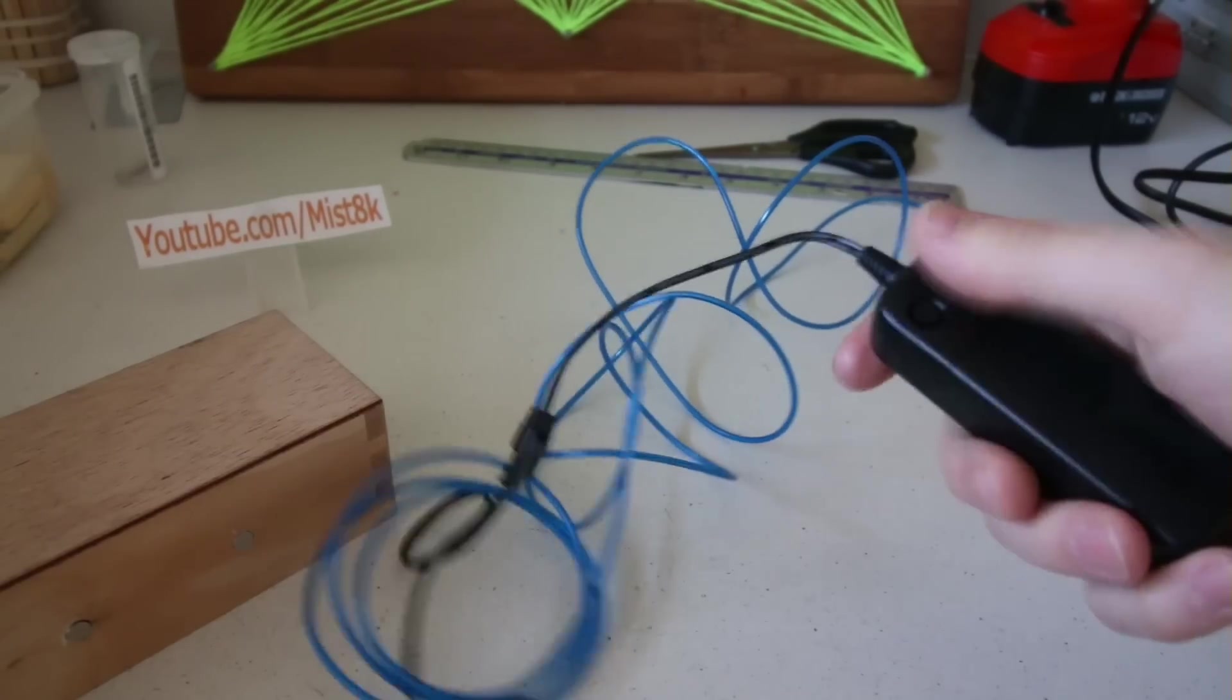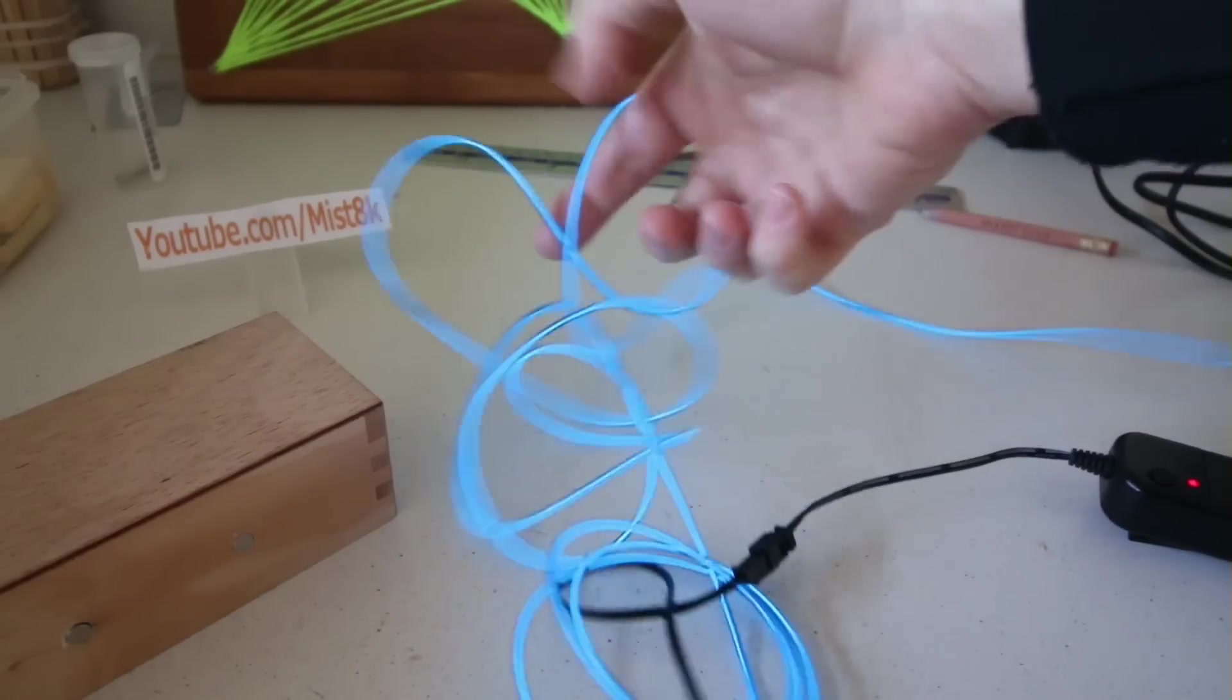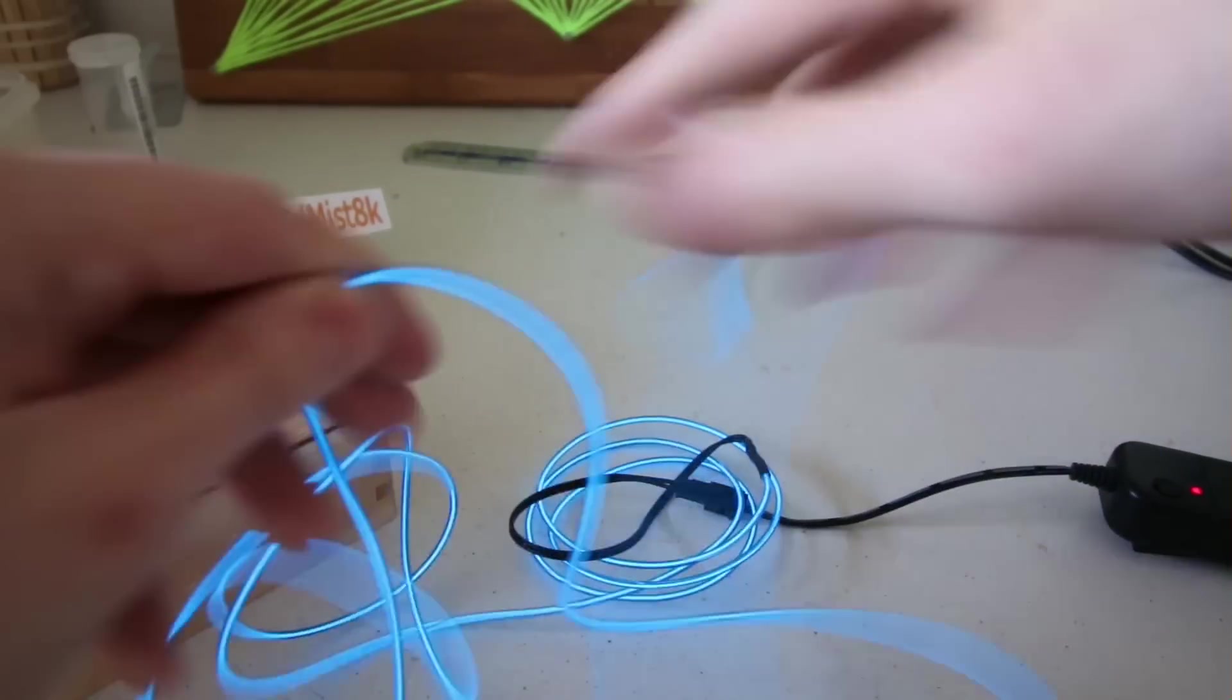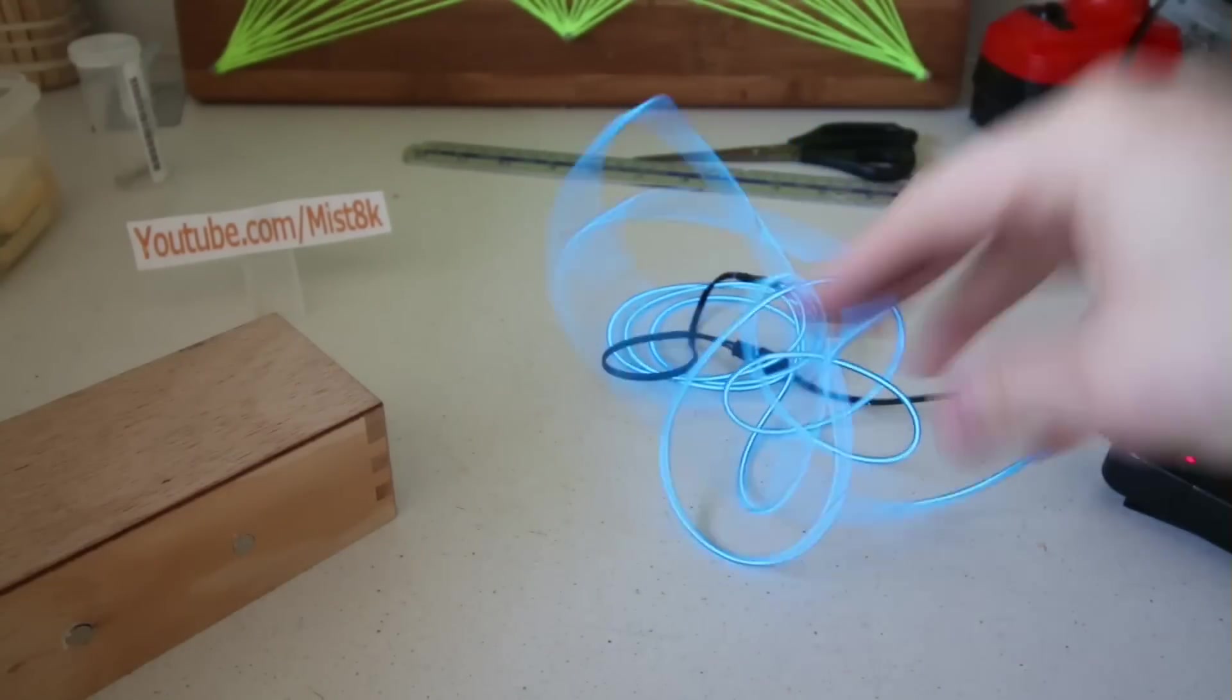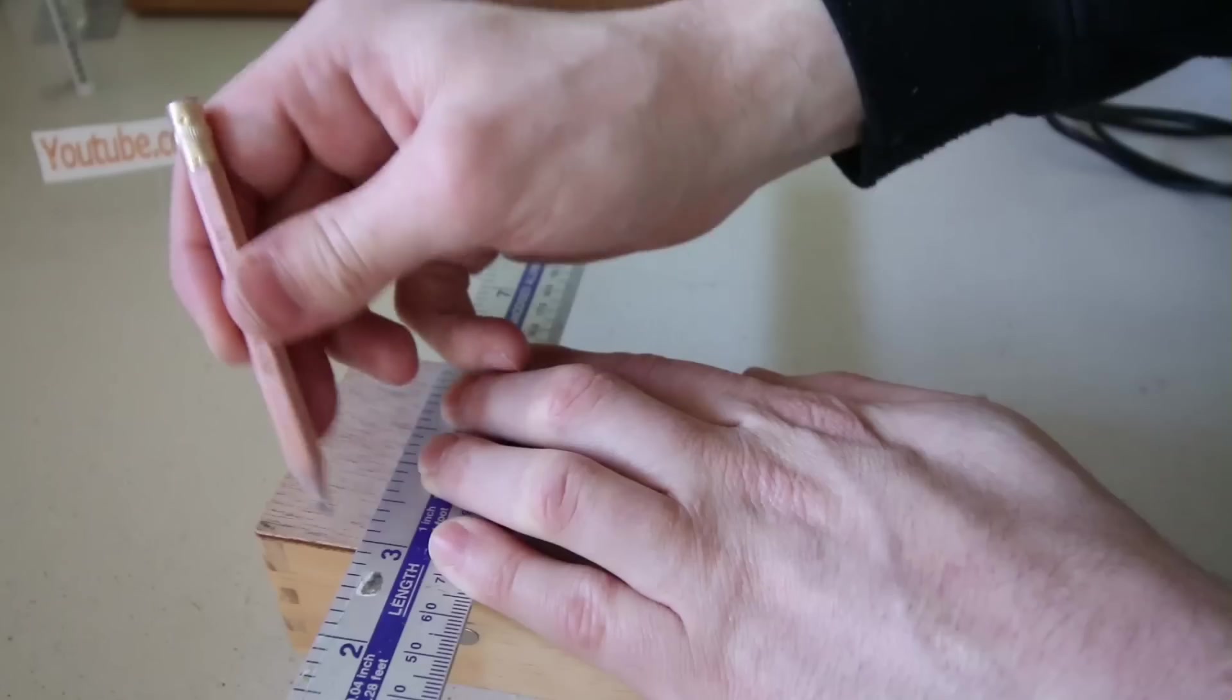I'll be lighting the thing up using this electro luminescent wire. Now this stuff's really cool as you can bend it and cut it into different shapes. I'm going to use the wire to write the word keys.